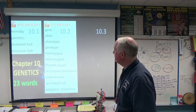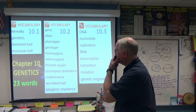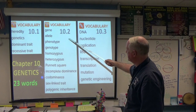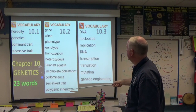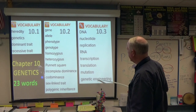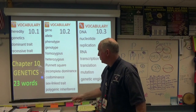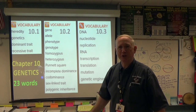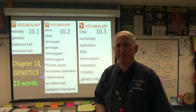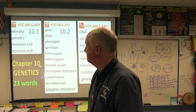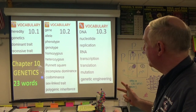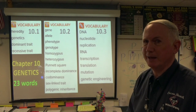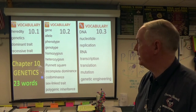First, take note of vocabulary words. Section one has four words, section two has all of these, and section three has all of these — twenty-three words total that you want to put on this concept map. That seems like a huge job to put all 23 on there.